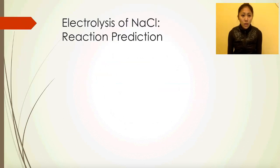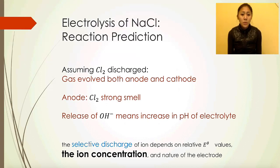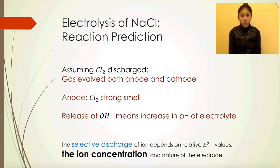Looking at reaction predictions: assuming chloride ions are discharged, gases evolve at both anode and cathode — chlorine at the anode, which gives a very strong smell. The release of hydroxide ions means there is an increase in the pH of the electrolyte. Therefore, the selective discharge of the ion depends on the ion concentration.